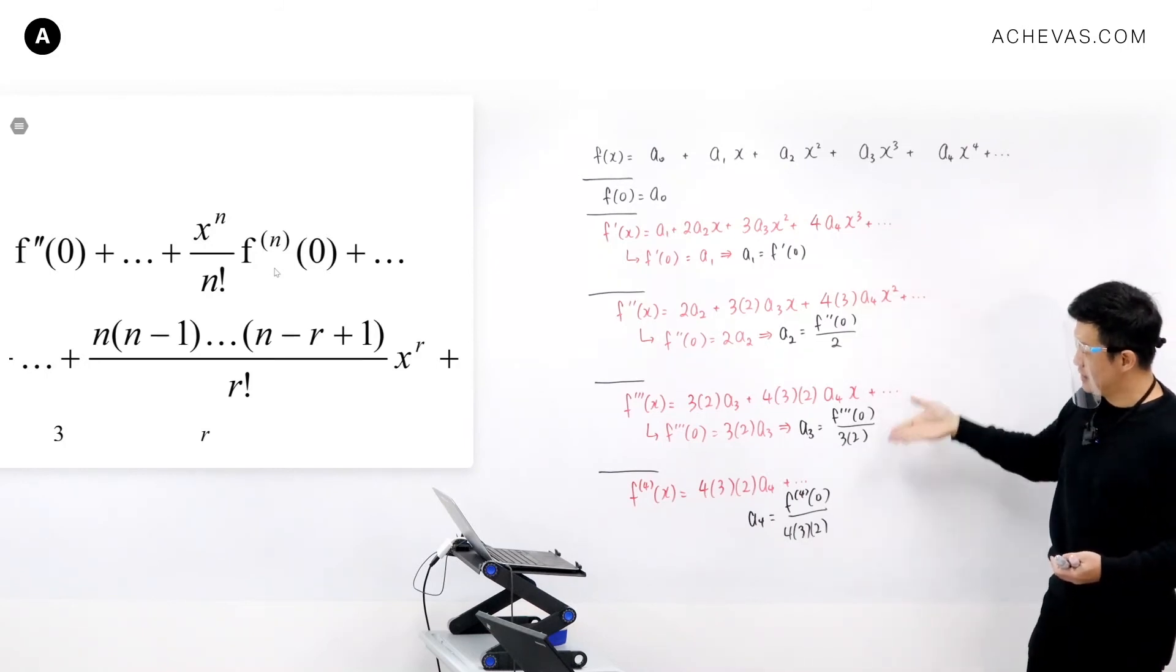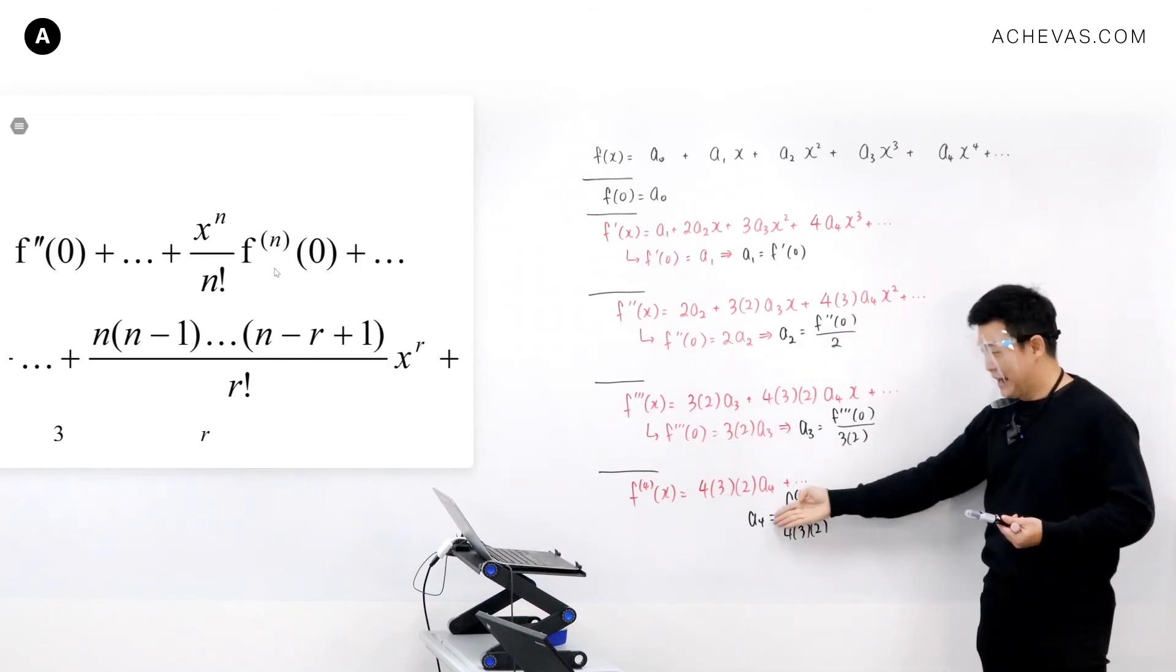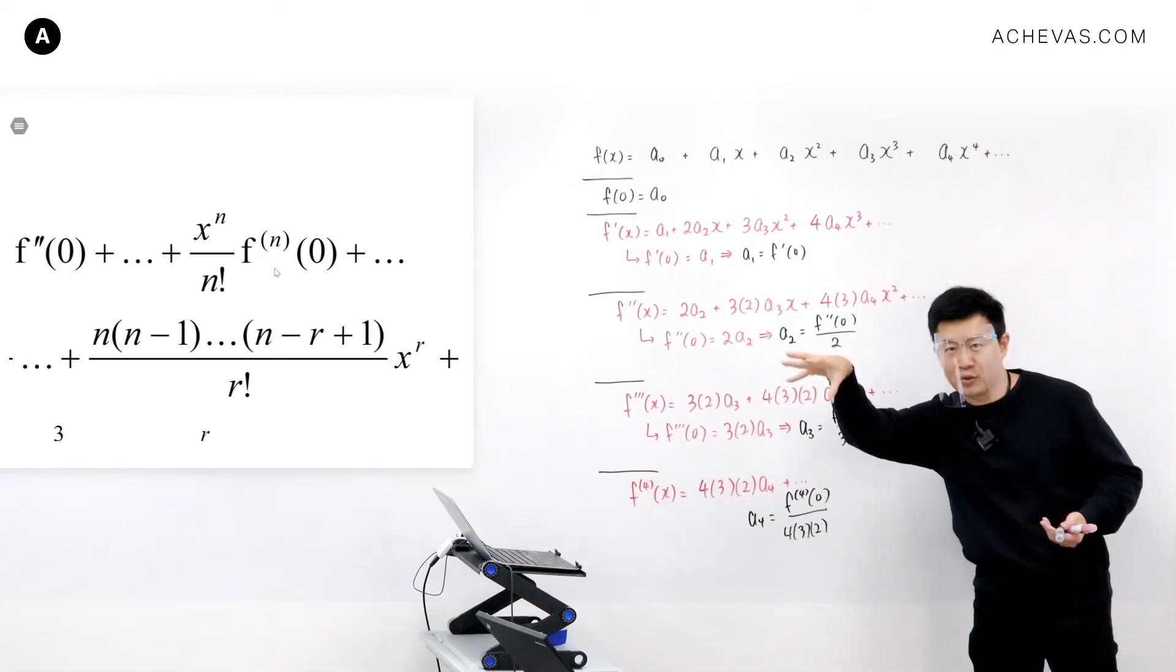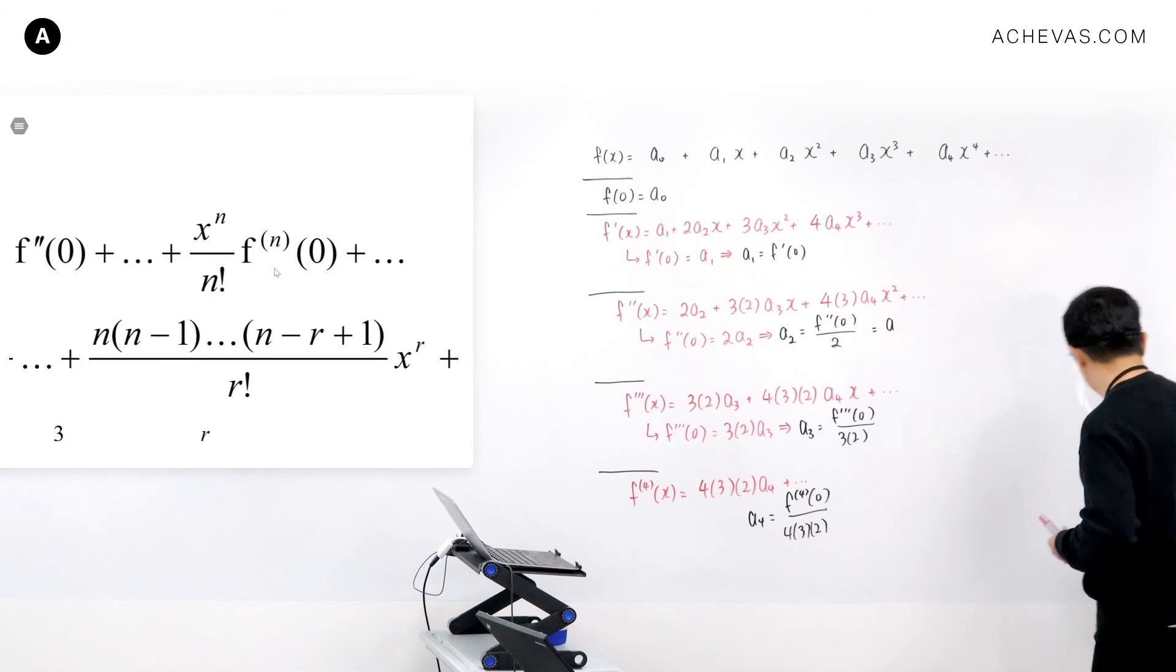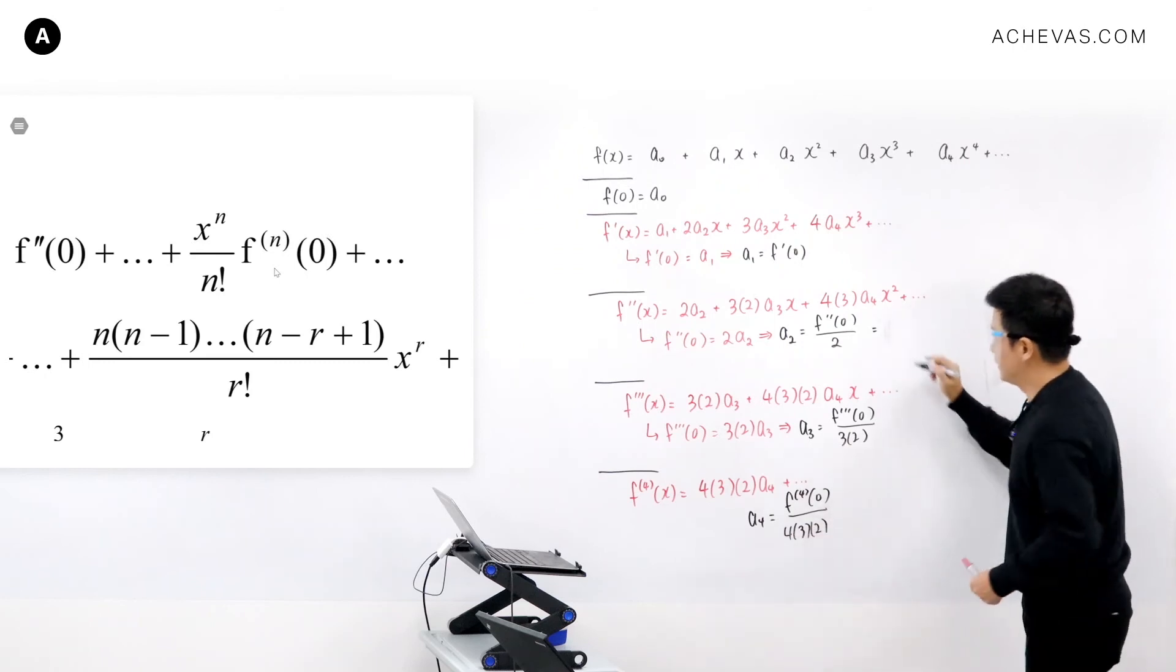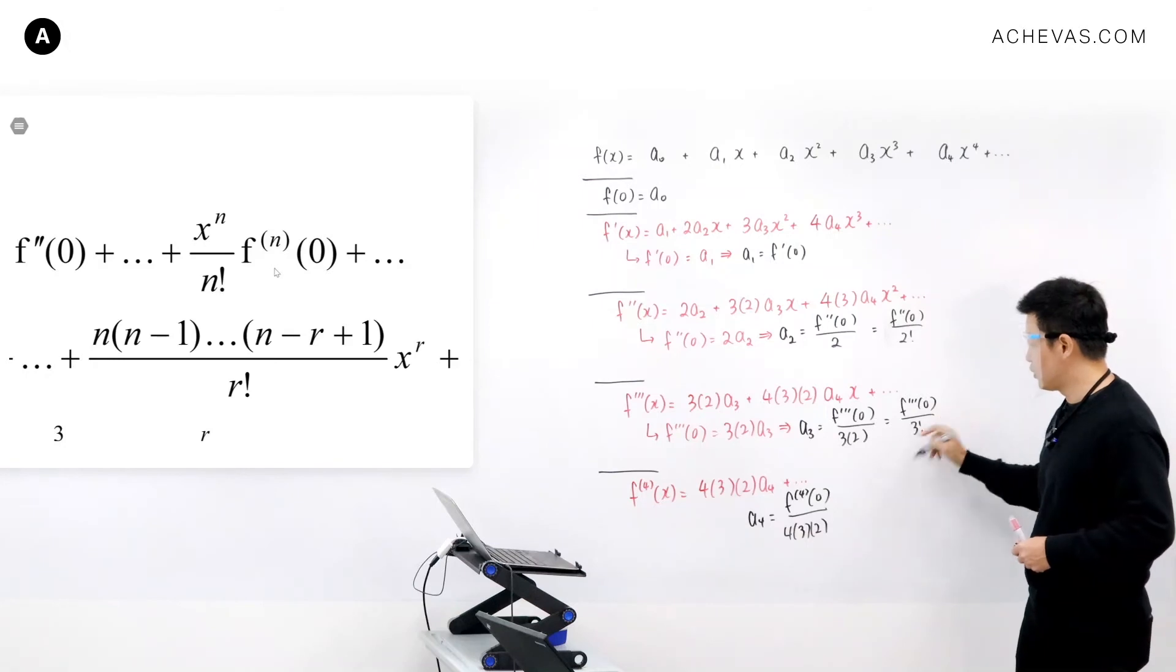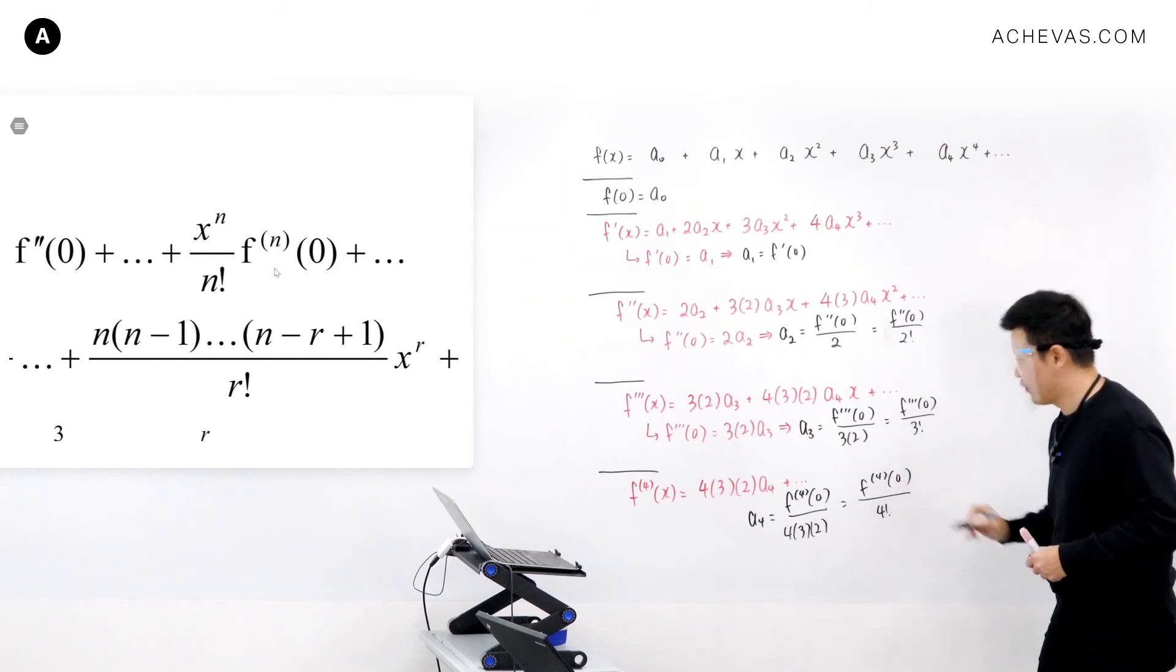Looking at these expressions, I think I can consolidate the denominator using factorial notation. Instead of writing 4 times 3 times 2, I'm going to rewrite this as f''(0) divided by 2 factorial. This becomes f'''(0) divided by 3 factorial. This will be f''''(0) divided by 4 factorial.